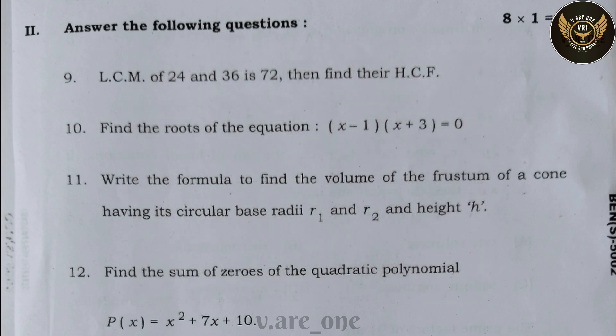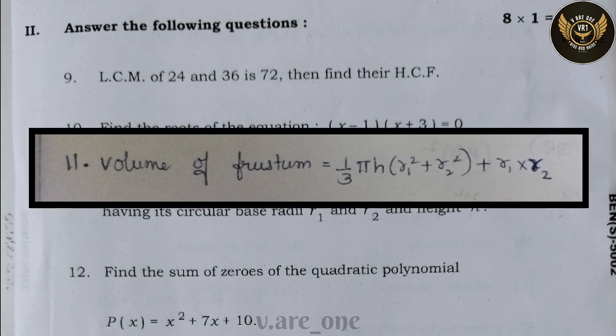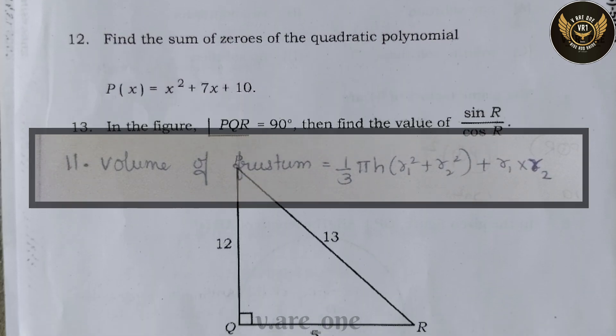Eleventh question: write the formula to find the volume of a frustum of a cone having circular base radii r₁ and r₂ and height h. The answer is: Volume of frustum of cone = (1/3)πh(r₁² + r₂² + r₁·r₂).